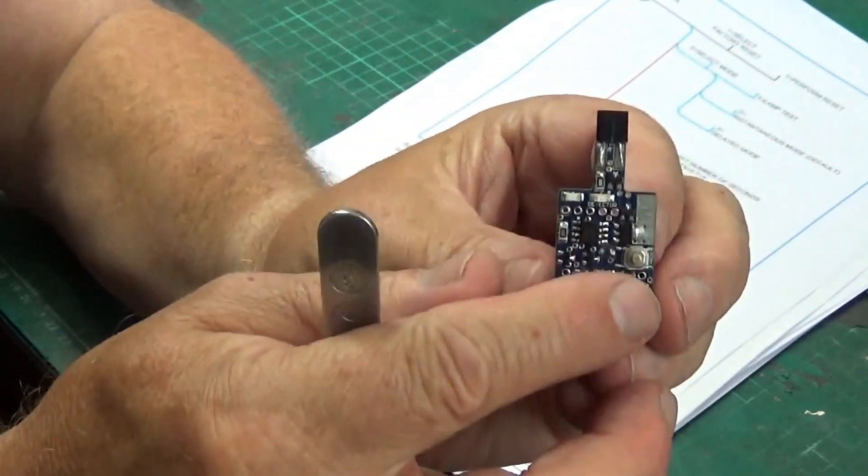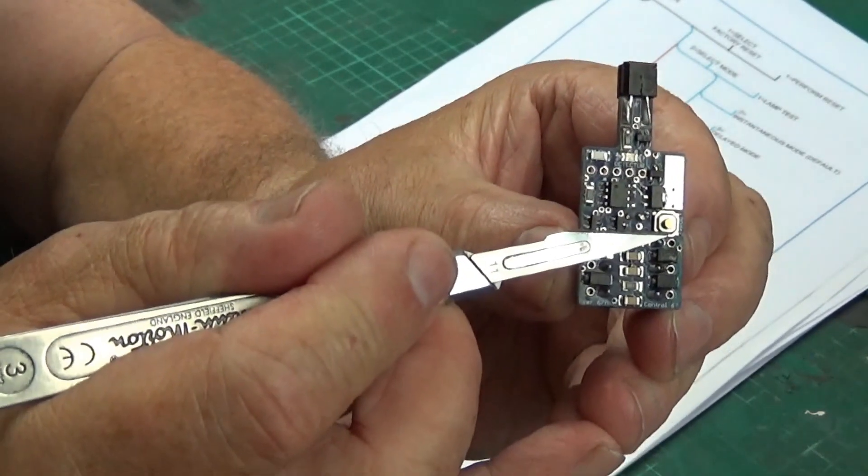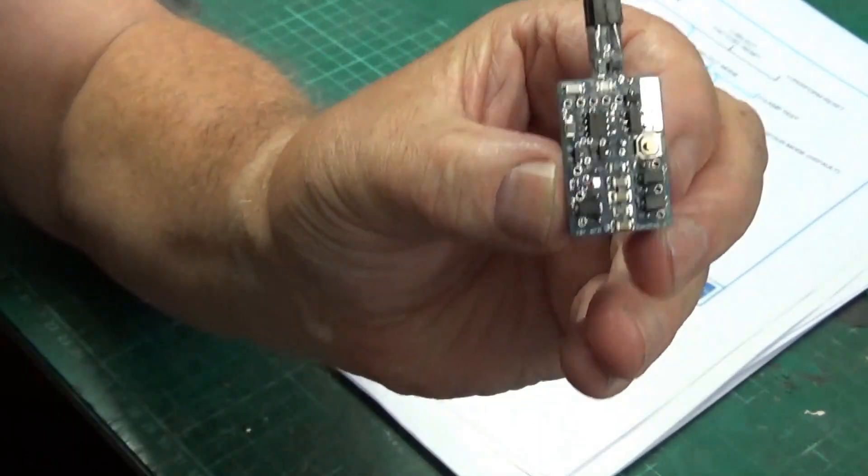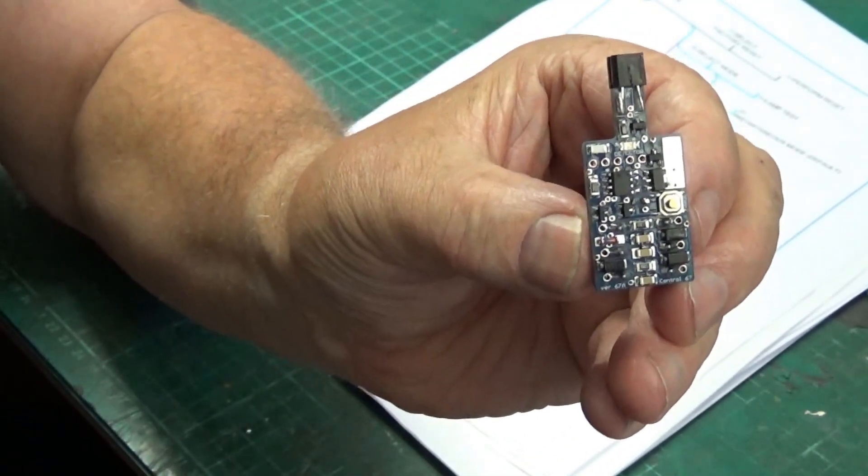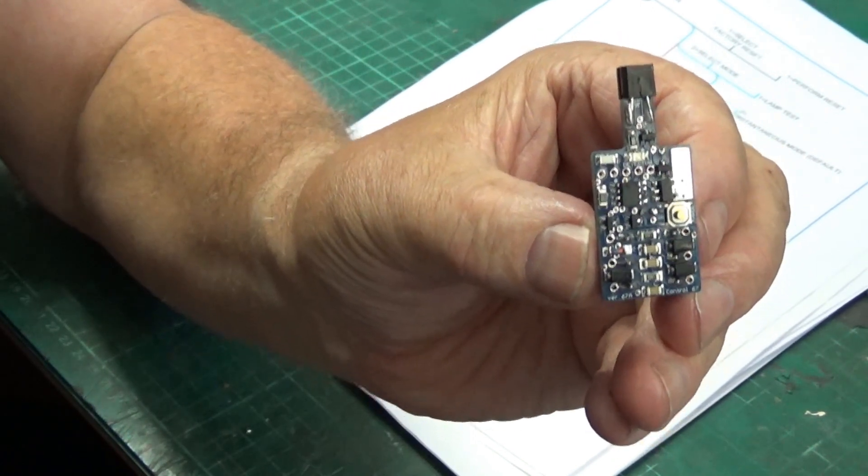The way that you program it is—I'll just flip it around—you can see there's a little brass push button there. You use the brass push button in connection with a flashing LED. What you do is find out how many LED flashes you need for the program that you want and you press the button and count the LEDs.